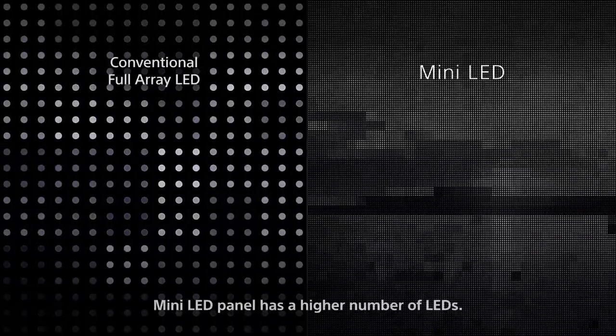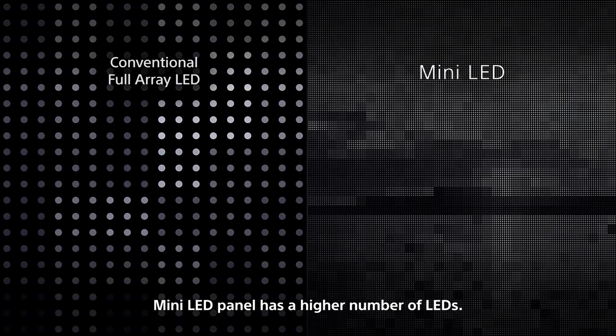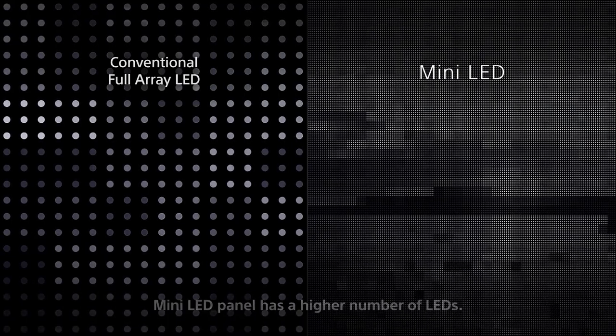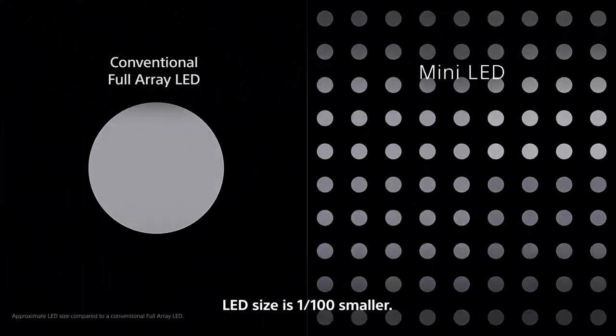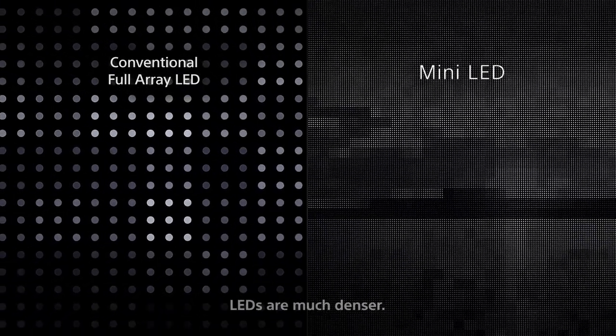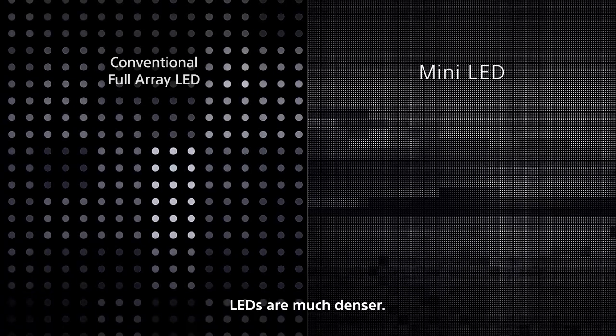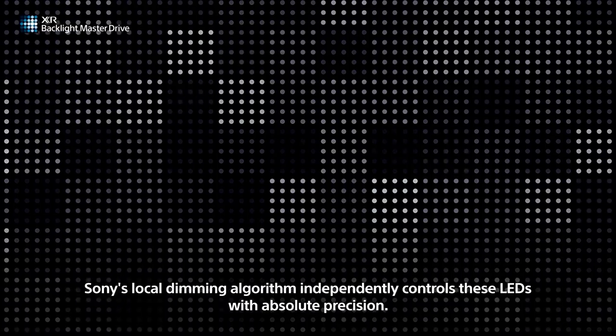On the cutting edge of Full Array is Mini-LED. What makes this technology unique is that it significantly increases the number of LEDs and independent zones. This is achieved by using much smaller LEDs in the backlight, hence the name Mini-LED. The benefit is extremely localized contrast — Mini-LED will pick out the exact points that need to be bright and selectively illuminate them.